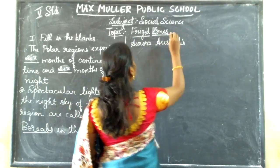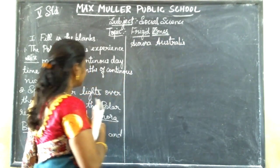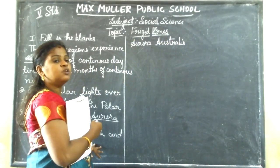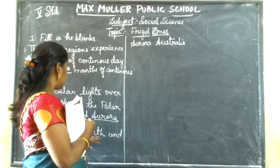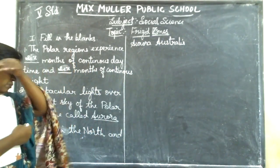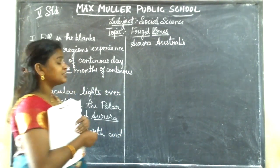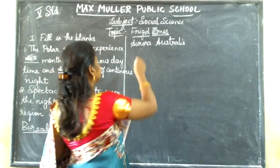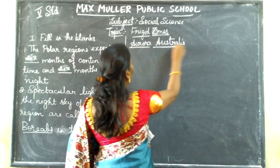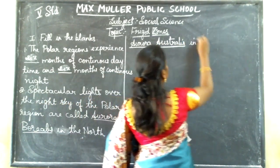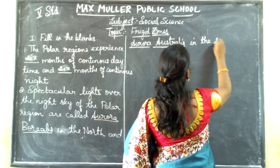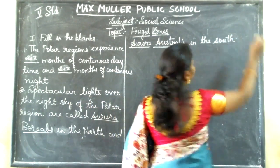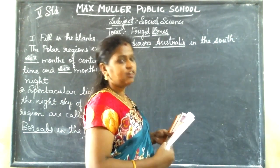The auroras formed in the north are called aurora borealis, whereas in the south the aurora is called aurora australis. The south frigid zone is in Antarctica continent.